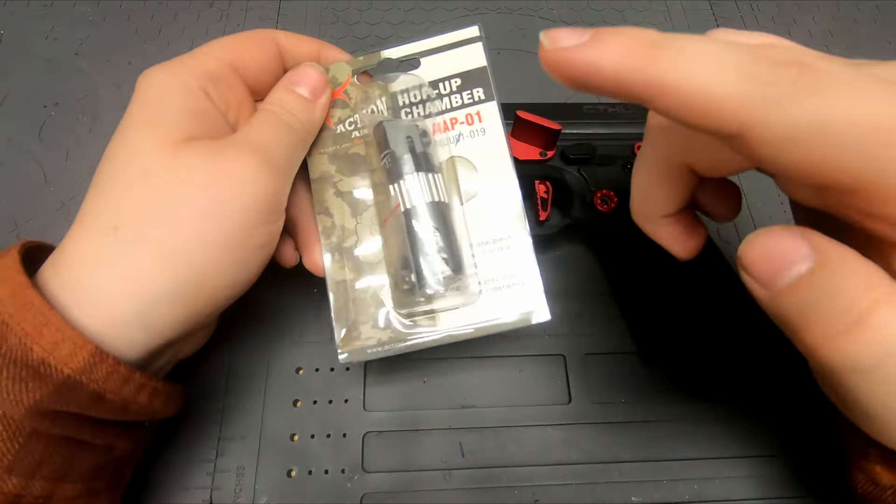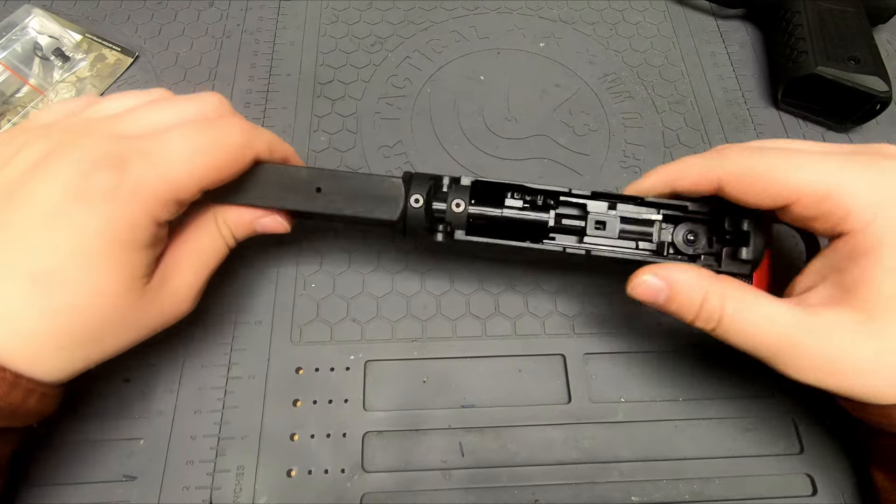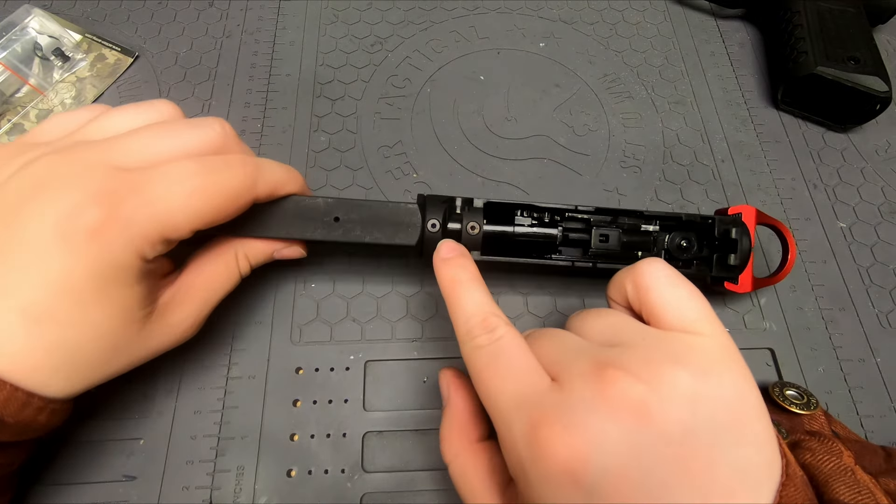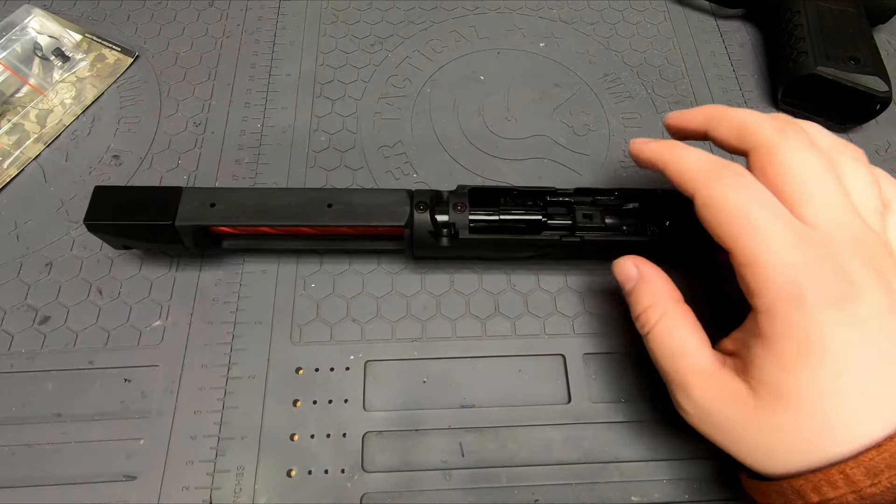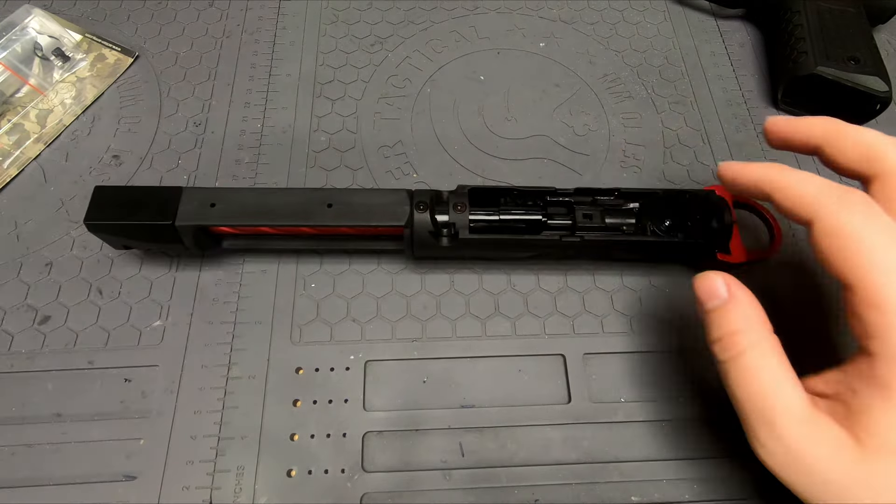So you've got to open up the receiver, and then now you just have the upper. You need to undo these two screws right here and that will remove the barrel from the upper.